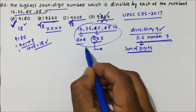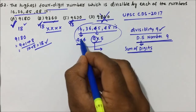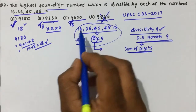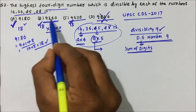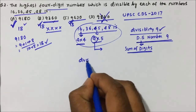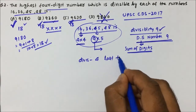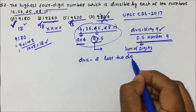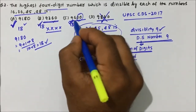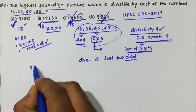Now let us apply the divisibility rule for 16 — which means the number should be a multiple of 4. The divisibility rule of 4 states that the last 2 digits should be divisible by 4. For option A, the last two digits are 80, which is divisible by 4. For option B, the last two digits are 60, also divisible by 4. But for option C, the last two digits are 30, which is not divisible by 4 — so option C is also rejected.